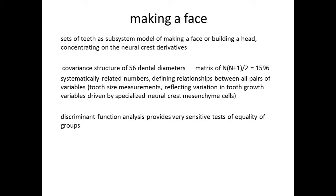The splitting is not what's doing it. Sets of teeth constitute a marvelous subsystem model of making a face, building a head. An awful lot of teeth, jaws, and face—your face is made of about seven pieces: two that come together here, two that come together here, one that comes down here, two for the nostrils. Your ears, jaws, and teeth are largely determined by neural crest cells. I used the covariance structure of 56 dental diameters—a matrix of 1,596 systematically related numbers defining structural relationships in a set of teeth. Highly coordinated: you've got four different basic structures of teeth, and your mouth wouldn't work nearly as well if they were randomly arranged instead of cutters in front and grinders in back.